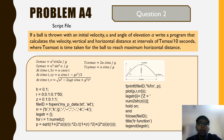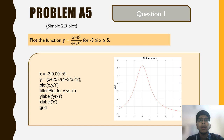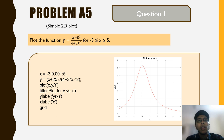Now we continue with problem 5, the last problem: simple 2D plot. The question says plot the function y = (x+5)^2 / 4 + 3x^2 for x in the interval from minus 3 to 5. We write x = -3:0.001:5 and write the equation for y, then add the title, y-label, x-label, and grid. After running the program we get the graph showing the function y over the given interval.